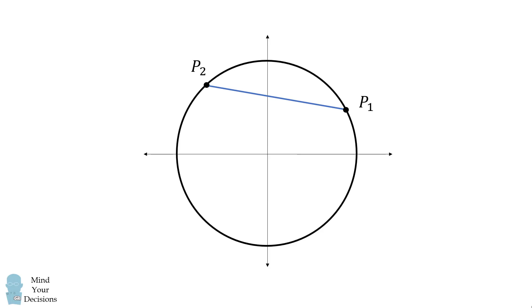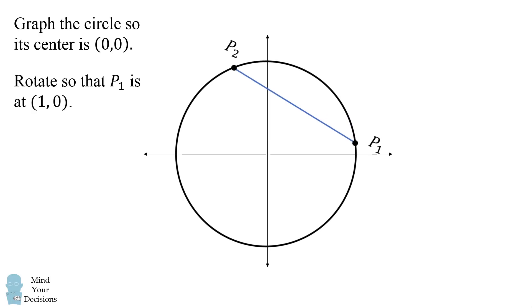We'll first put the circle so its center is at 0, 0. Next, we'll rotate the entire circle and the points so that p1 is located at 1, 0. Notice this does not change the distance between p1 and p2.